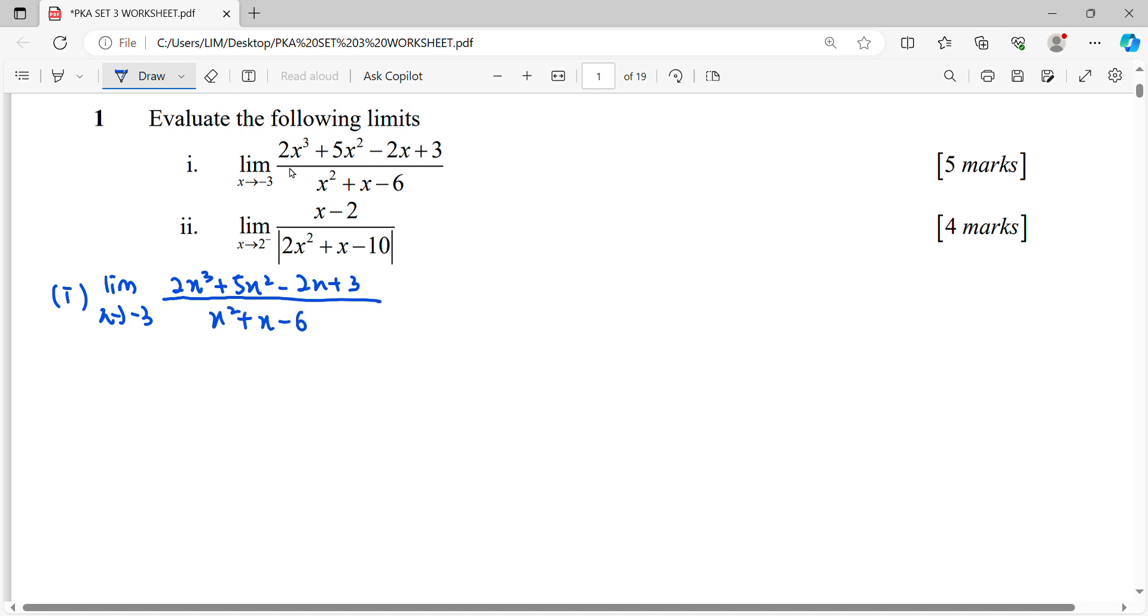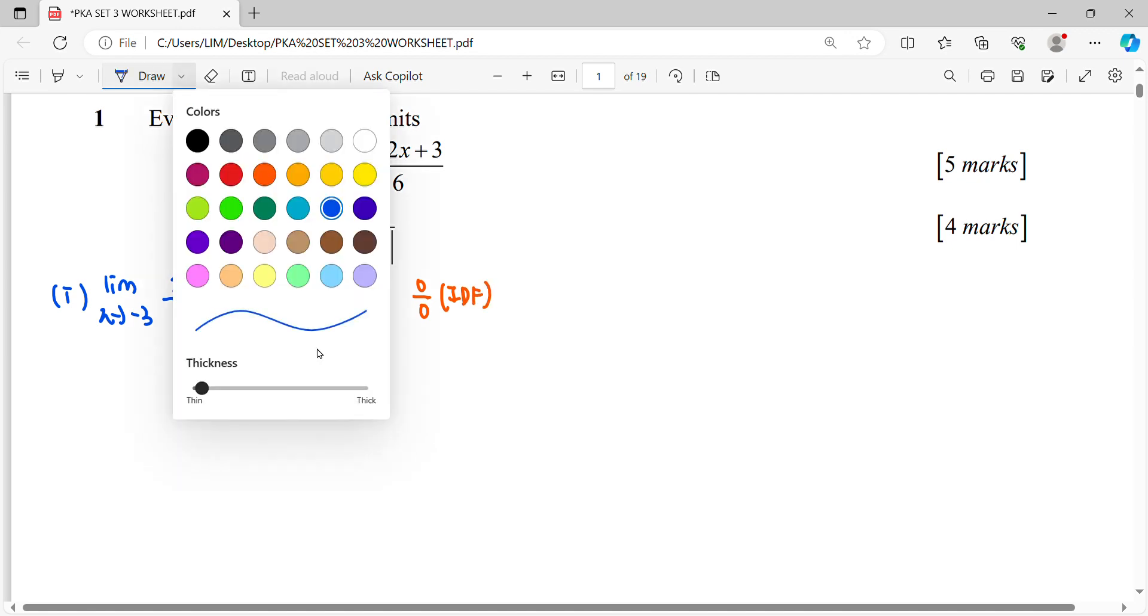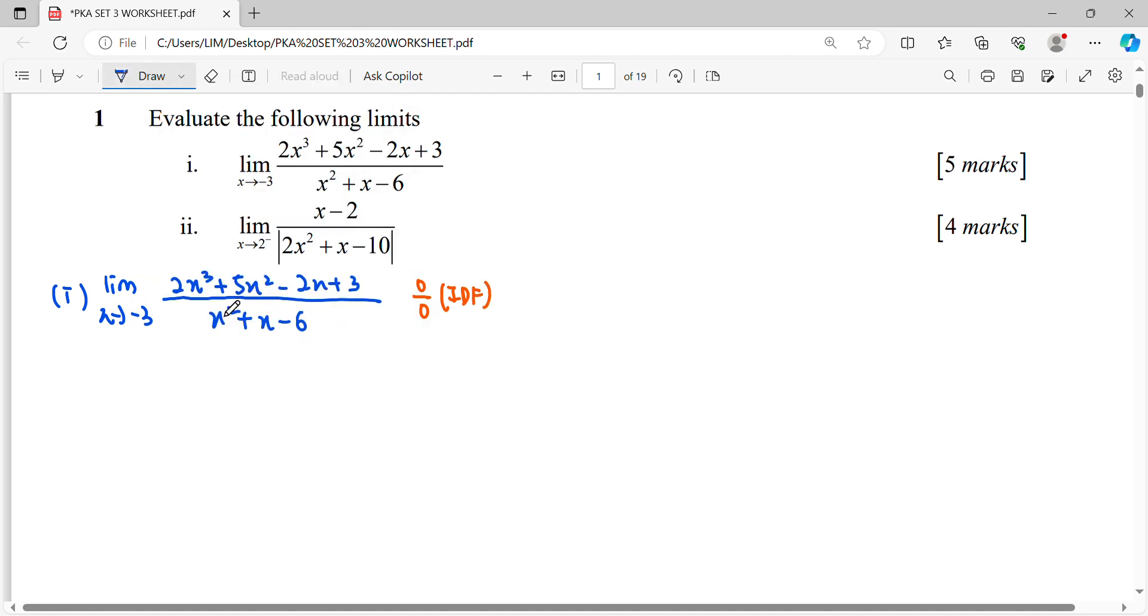Our first attempt is to substitute negative 3. When we substitute negative 3, you'll notice it will be 0 over 0, which is indeterminate. This means the function needs to be simplified.